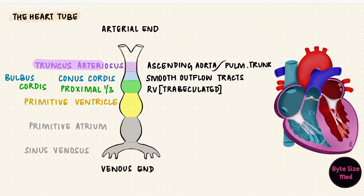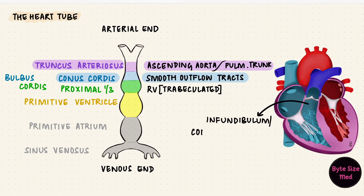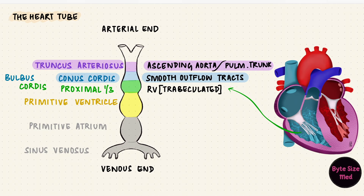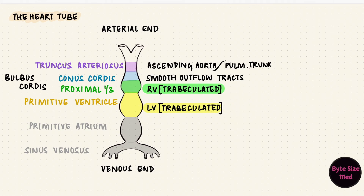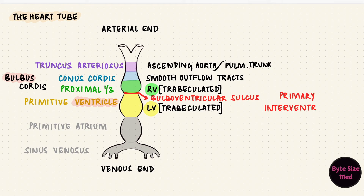So the truncus arteriosus forms the ascending aorta and the pulmonary trunk. The conus cordis forms the smooth outflow tract — that's the infundibulum or conus arteriosus on the right and the aortic vestibule on the left. The proximal one-third of the bulbus cordis forms the trabeculated part of the right ventricle, and the primitive ventricle forms the left ventricle. Between the primitive ventricle and the bulbus cordis is a sulcus called the bulboventricular sulcus, which is a site of communication between the two ventricles, also called the primary interventricular foramen.